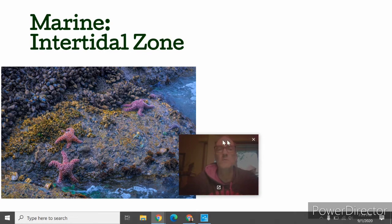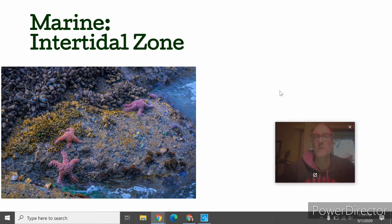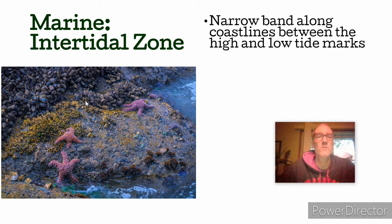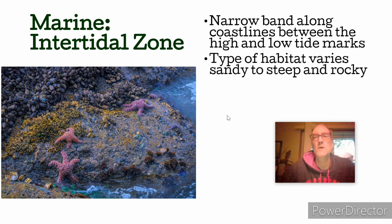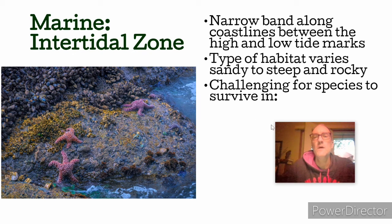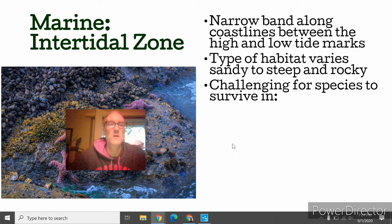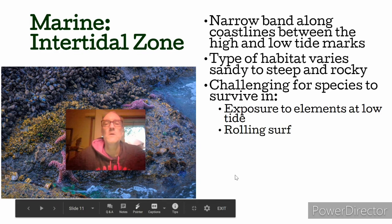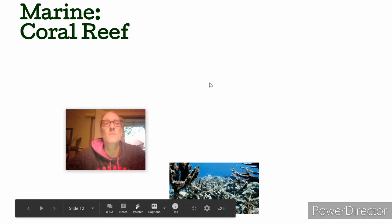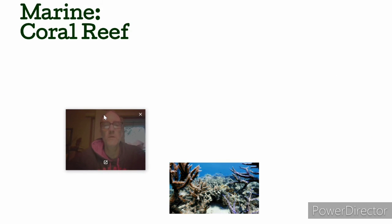Another ecosystem I'm sure you're familiar with is intertidal zones. If you've ever been to the beach and walked along rocks, you may have found mussels, barnacles, and starfish. This is a narrow area between coastlines where tides come and go. Habitat can vary from sandy to very rocky depending on location. It's a pretty difficult place to live abiotically because of the changing tides and wave action, so species must be adapted to those harsh conditions.